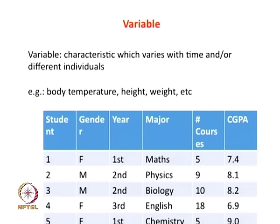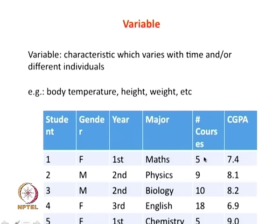Here is an example of data from five students in a class. You have the following variables: gender, the year in which the student is enrolled (first year, second year, and so on), what they are majoring in — be it maths, physics, biology, etc. — how many courses they have already done, and what the GPA of that particular student is. The nature of the variable differs a lot.